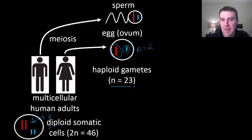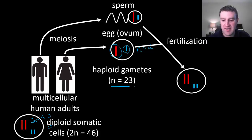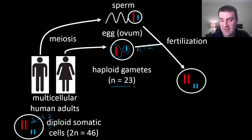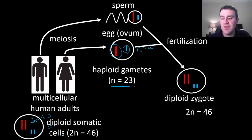Meiosis is only the first step in producing an offspring. The second step would be a male and a female coming together in sexual intercourse, giving a chance for the sperm to merge with the egg — and we call that process fertilization. When fertilization happens, we now have a cell that has both chromosome sets again. We call that diploid cell the zygote — that's a term used across all species when sperm and egg come together. So here we are back to 2n equals 46 for humans, the diploid set.